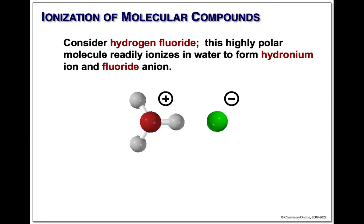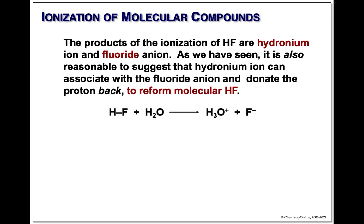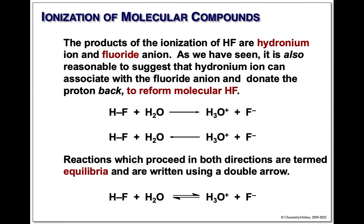We can show this in an equation: HF reacting with water to give hydronium and fluoride anion. Just like with water, we can go in the forward direction but also reverse — going back to give us HF and water again. This reaction goes back and forth 10⁶ to 10⁸ times per second; it's a very, very fast reaction. In chemistry we show this using a special double arrow — this is called an equilibrium. Whenever you have a reaction that can proceed in both directions simultaneously and very rapidly, that's an equilibrium.